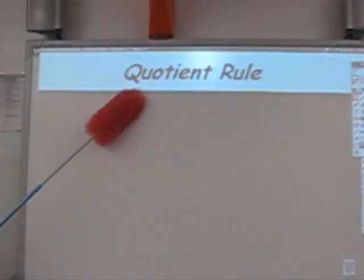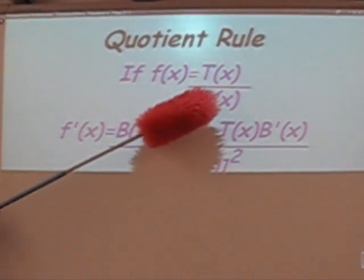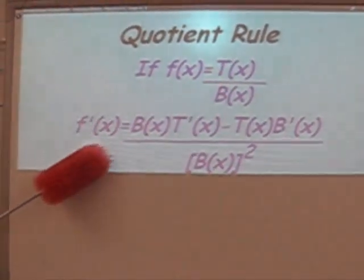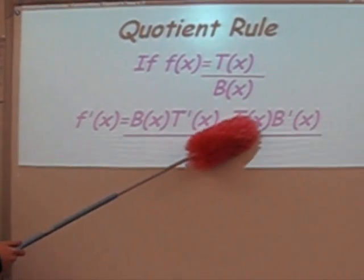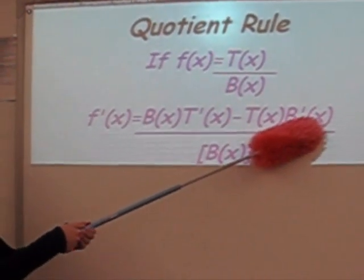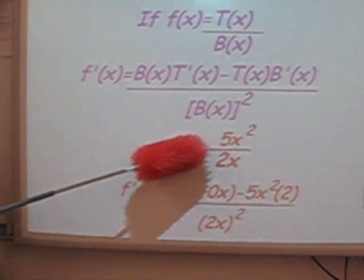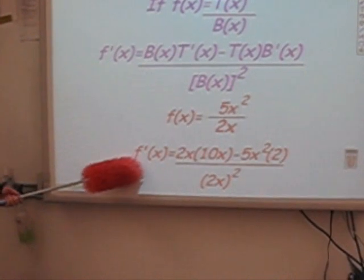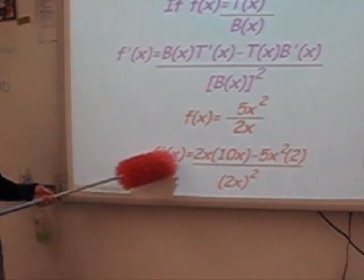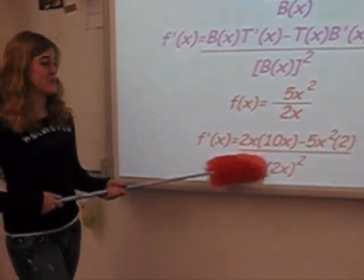And now, the quotient rule. If f of x equals the top function over the bottom function, then f prime of x equals the bottom function times the derivative of the top function minus the top function times the derivative of the bottom function, all over the bottom function squared. For example, if f of x equals 5x squared over 2x, then the quotient rule would make f prime of x equal to 2x times 10x minus 5x squared times 2, all over 2x squared.